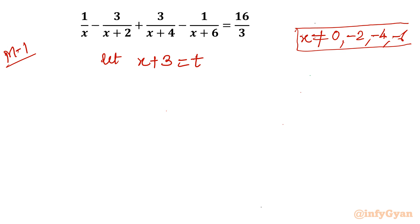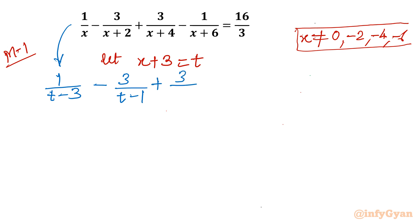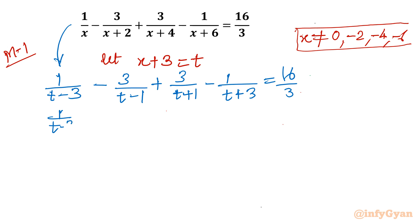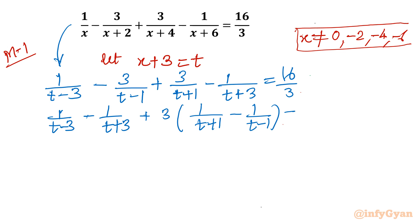Once x plus 3 equals t, then x equals t minus 3. So 1 over x becomes 1 over t minus 3. The equation converts: t minus 3 over x plus 2 gives t minus 1 in the denominator, plus 3 over x plus 4 gives t plus 1, minus 1 over x plus 6 gives t plus 3, equal to 16 over 3. Now I will consider t minus 3 and t plus 3 together, then 3 times the quantity 1 over t plus 1 minus 1 over t minus 1, equal to 16 over 3.